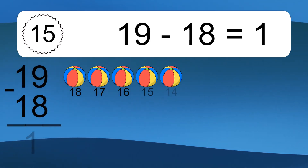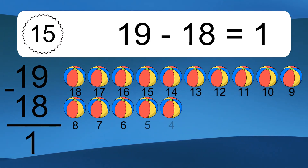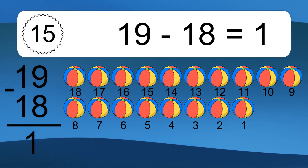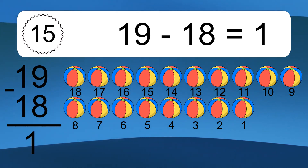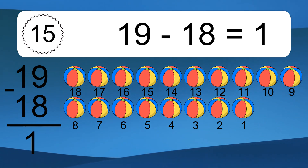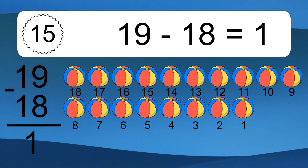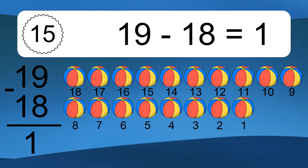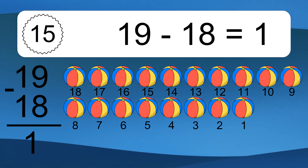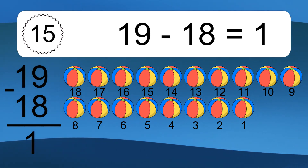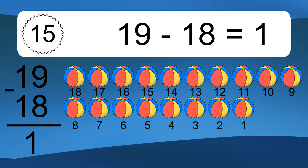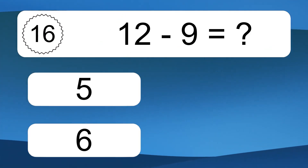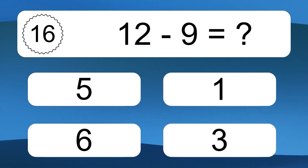19 minus 18 equals what? 19 minus 18 equals 1. Let's count it: 18, 17, 16, 15, 14, 13, 12, 11, 10, 9, 8, 7, 6, 5, 4, 3, 2, 1.